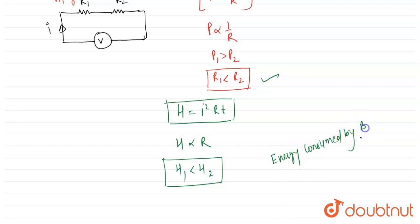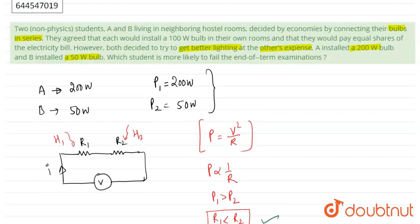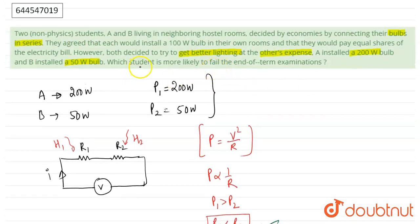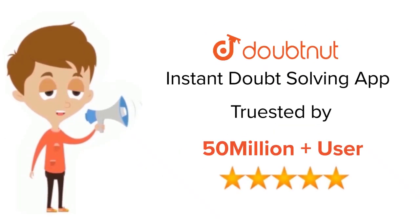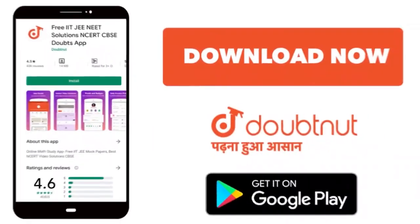So the correct answer will be that student A will be more likely to fail in their end of term examination. For class 6 to 12th, IIT, JEE and NEET level, trusted by more than 5 crore students, download Doubtnet today.